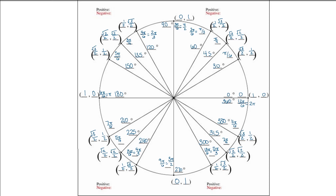Last, let's figure out our signs. Keeping in mind 'all students take calculus': in quadrant 1, all values are positive. In quadrant 2, sine is positive but cosine and tangent are negative, which means all of our x values are negative. In quadrant 3, tangent is positive but sine and cosine are negative, so both x and y are negative. And in quadrant 4, cosine is positive but tangent and sine are negative, so all of our y values are negative. And that's our unit circle.